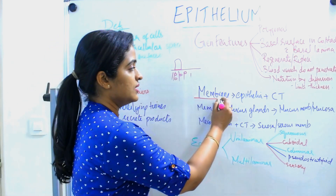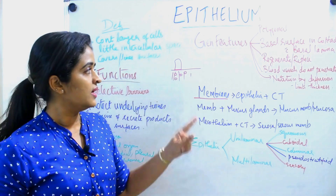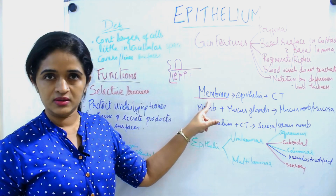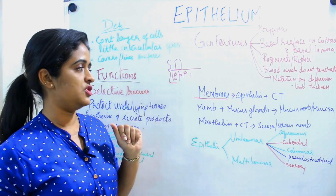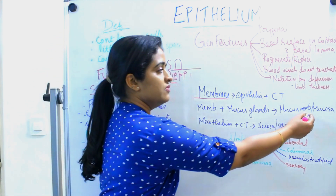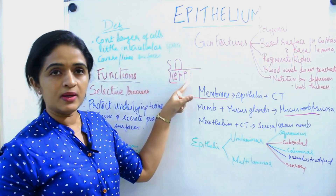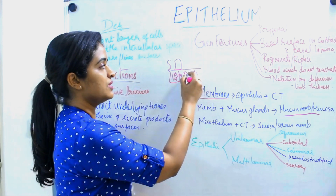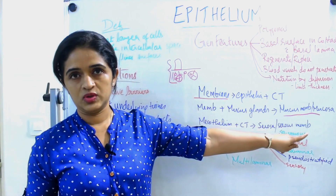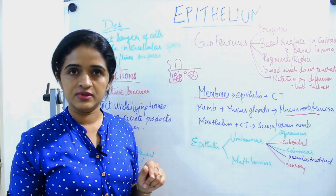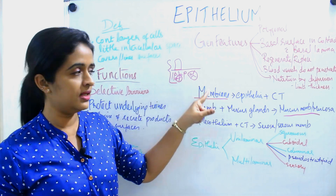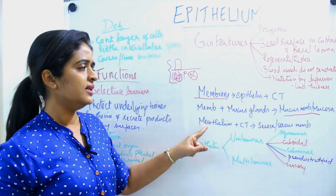Now some general terms which you have to keep in mind. First: when will you call a structure a membrane? Epithelium along with the connective tissue together you call a membrane — so a membrane is nothing but epithelium along with the connective tissue. When will you call it a mucous membrane or mucosa? If this membrane is having mucous glands in it in order to lubricate it, that is known as a mucous membrane or mucosa.